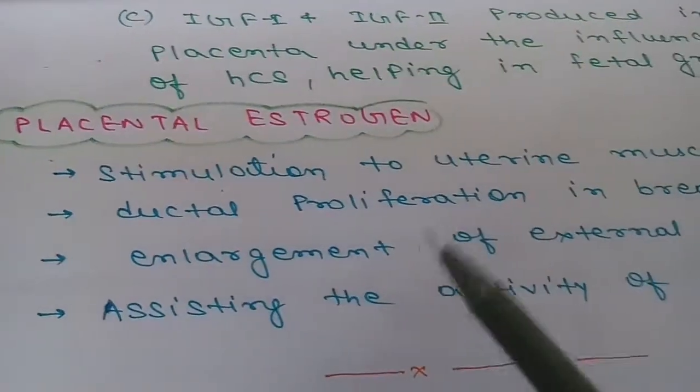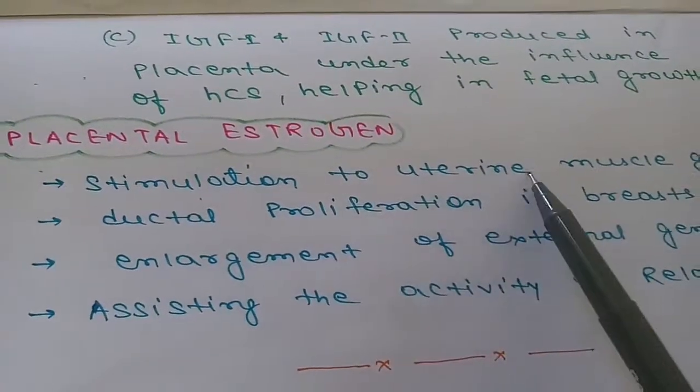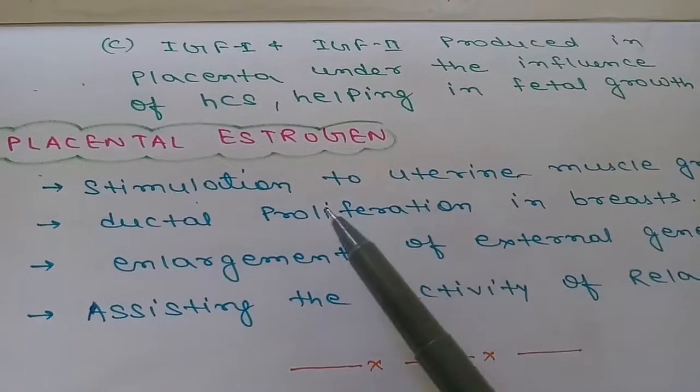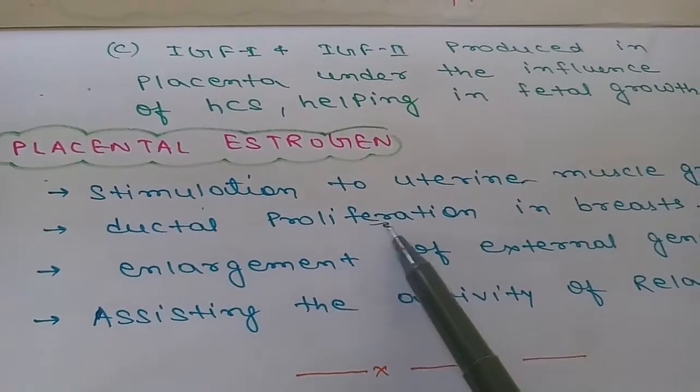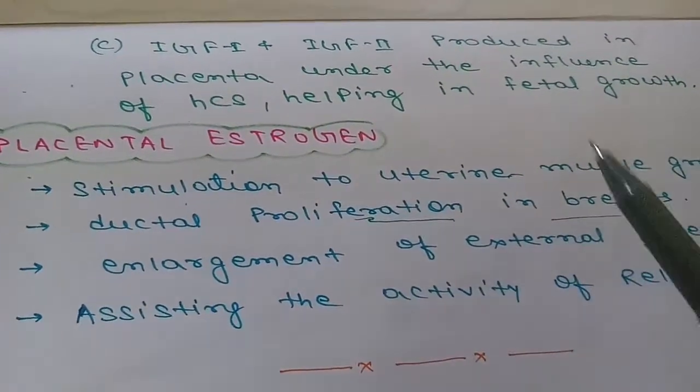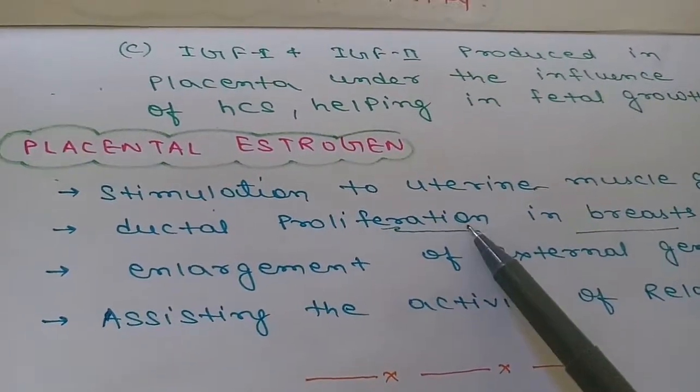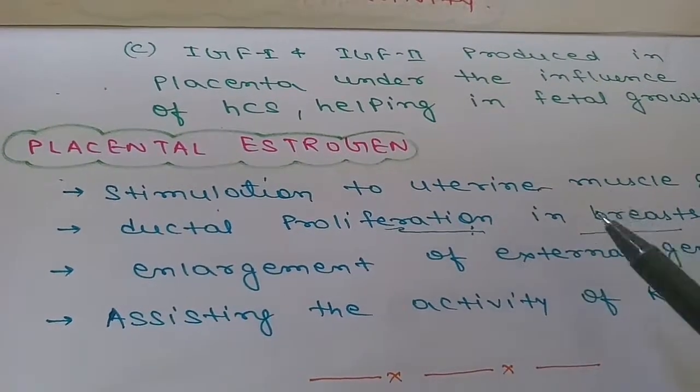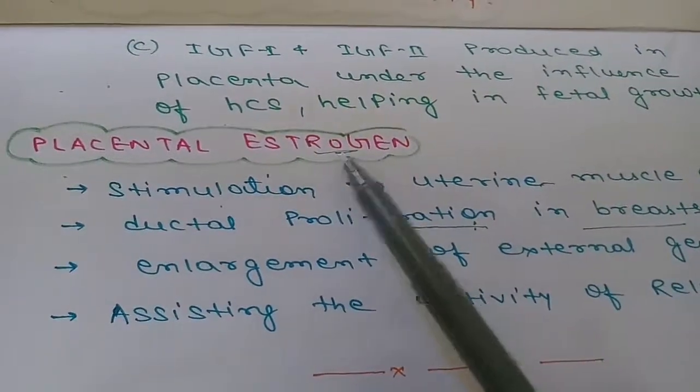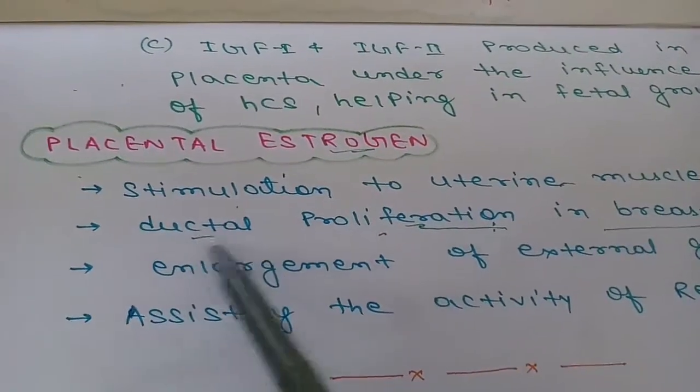Now coming to placental estrogen. It stimulates uterine muscle growth during pregnancy and induces ductal proliferation in breast. As we discussed, progesterone increases the number of lobules, thus helping in breast growth, while placental estrogen causes ductal proliferation.